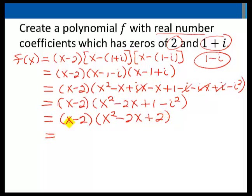Let's finish off multiplying these two polynomials together. I'll distribute the x from the first through the second, giving x cubed minus 2x squared plus 2x.